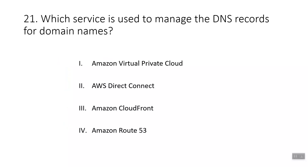The twenty-first question: which service is used to manage the DNS records for a domain name? The answer is Amazon Route 53, a highly available and scalable domain name system web service. It gives developers a reliable way to route users to internet applications hosted in AWS, and also allows you to transfer DNS records for existing domain names or register new domain names directly in Route 53.